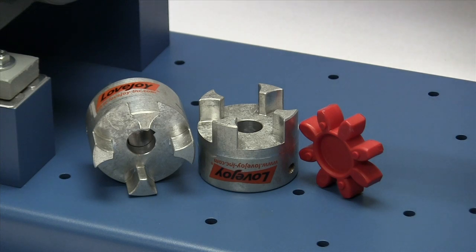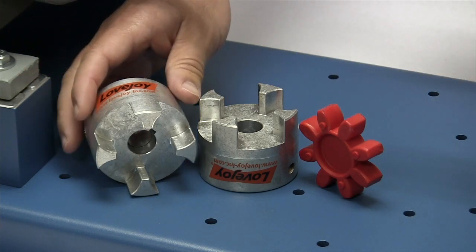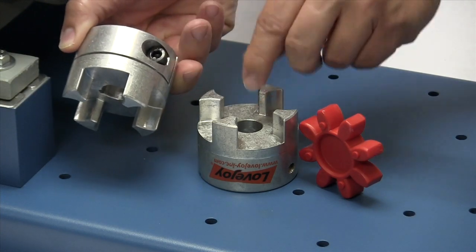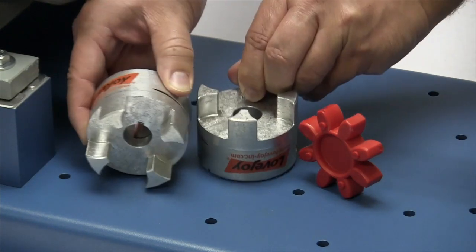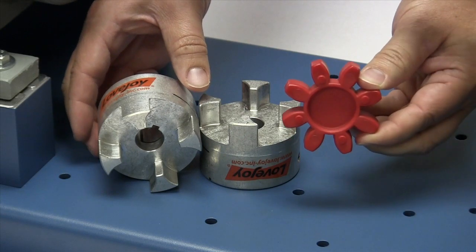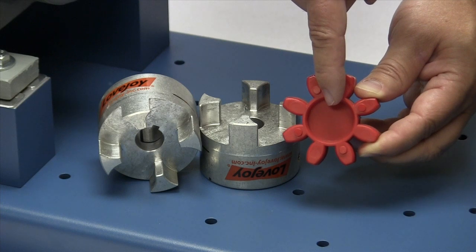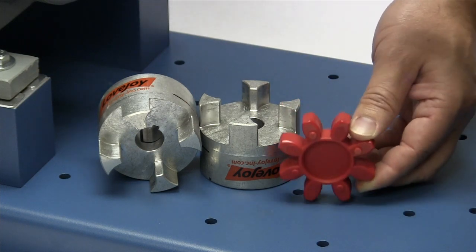The following components are provided with the purchase of your Lovejoy GS clamp style curved jaw coupling. You should have two GS clamp style hubs and a GS spider. You may note that the GS spiders are similar to the curved jaw spiders except that the GS spiders have a closed or webbed center.